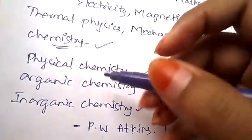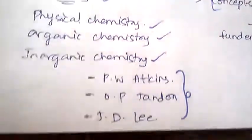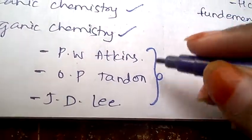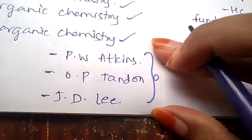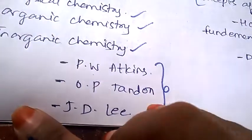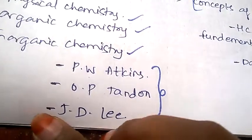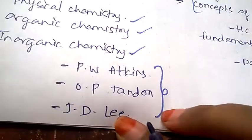Now let's see what is the portion for chemistry. It is physical chemistry, organic chemistry, and inorganic chemistry. The three authors who produce the standard books for chemistry are PW Atkins, OP Tandon, and JD Lee.